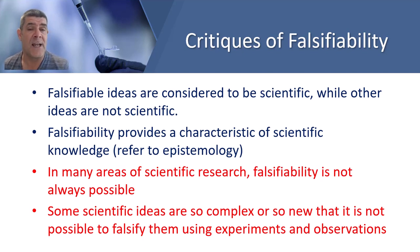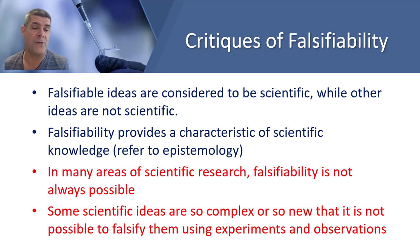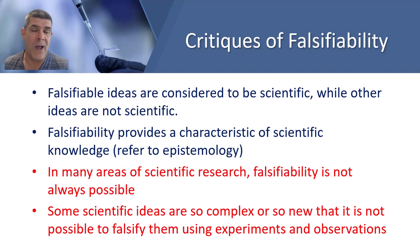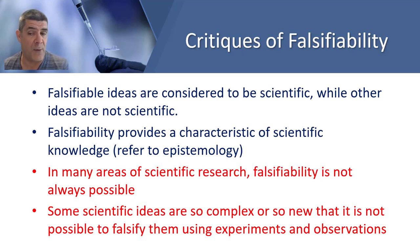Some scientific ideas being developed, particularly those in physics, are so complex or so new that it's just not possible to falsify them during experiments and observations. One example is the theory of general relativity, which was only validated many years after the theory was published. Another example: Peter Higgs and his colleagues proposed the existence of the Higgs boson in 1964, but this was only experimentally verified by scientists at CERN in 2012. Therefore, even though these ideas were not falsifiable when initially proposed, they were subsequently validated through scientifically generated data.